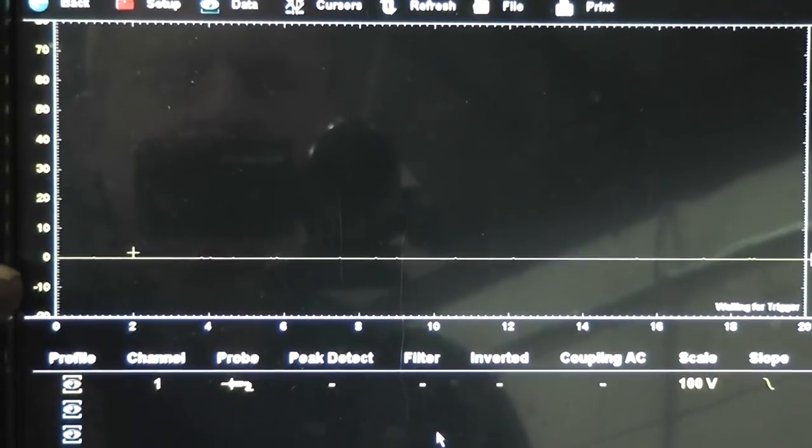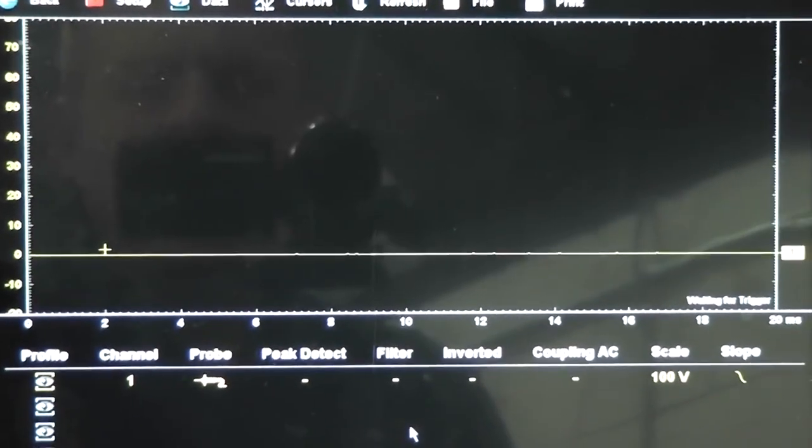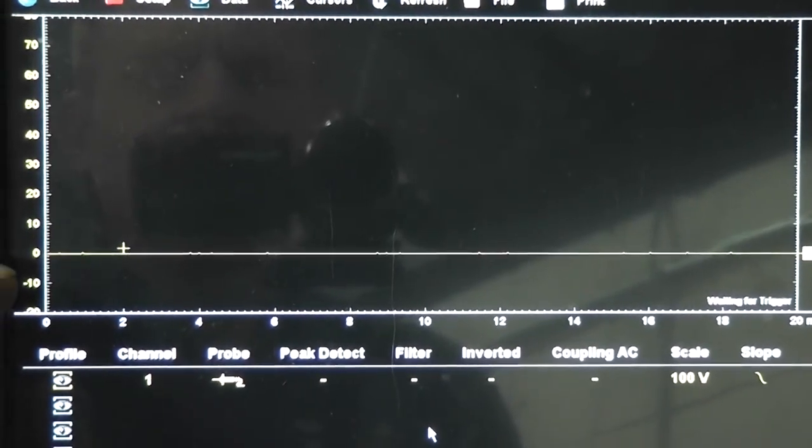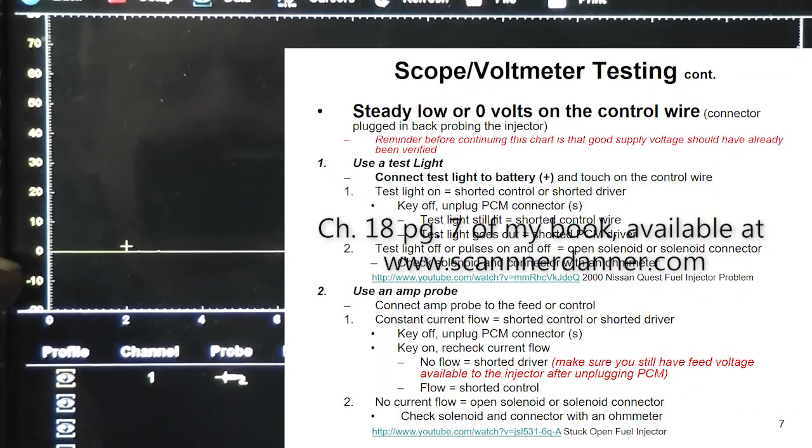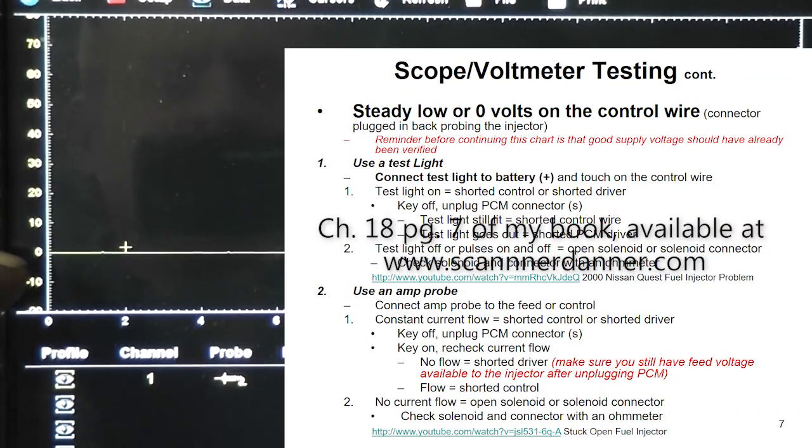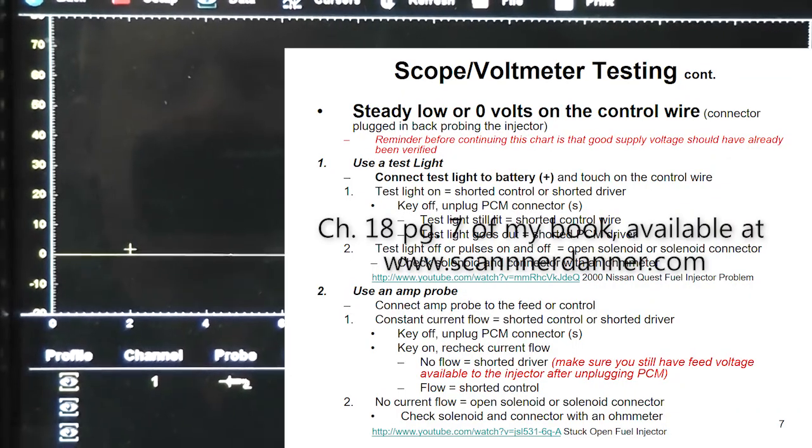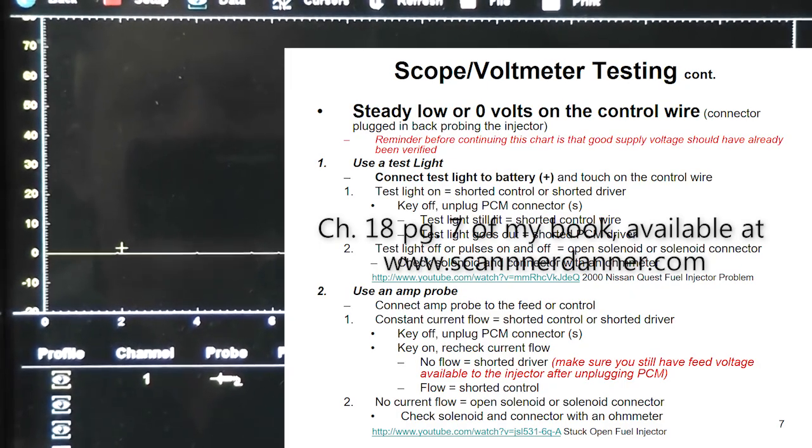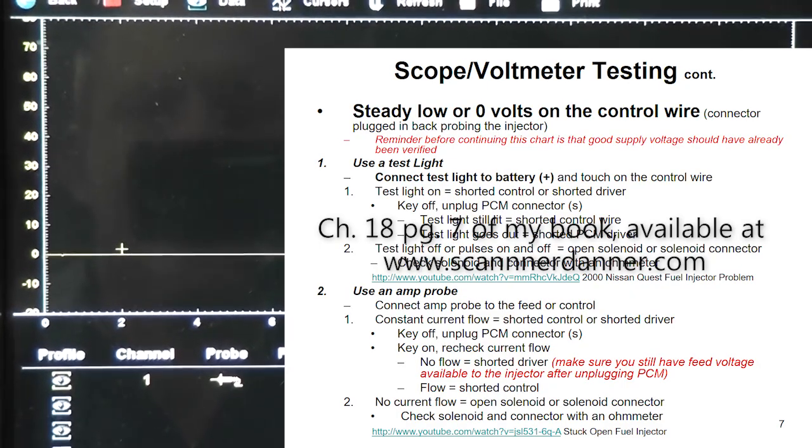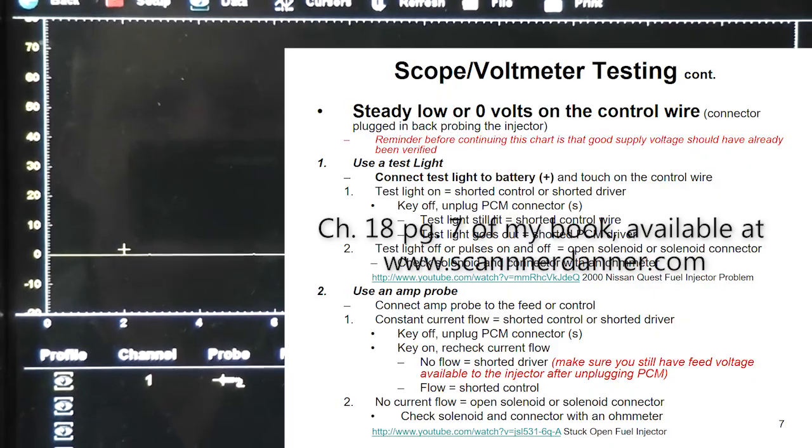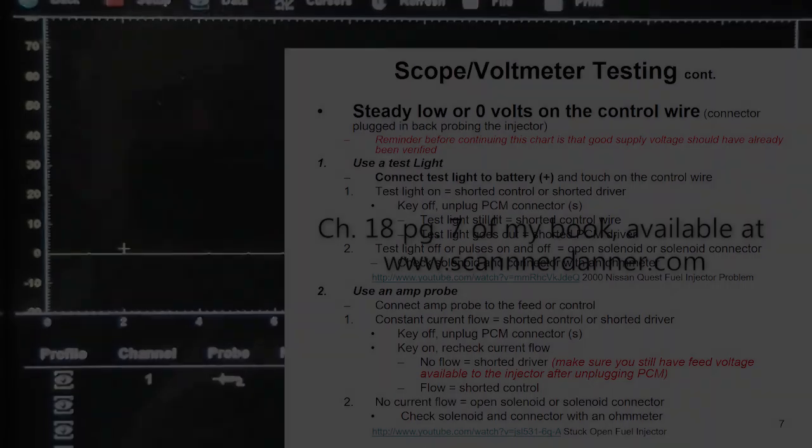What we're dealing with with no control is either a short to ground on the control wire, a shorted driver, or we have an open circuit. And I want to show you that this injector is actually on all the time based on the smell of the exhaust and the amount of smoke and the color of the smoke coming out of the tailpipe.